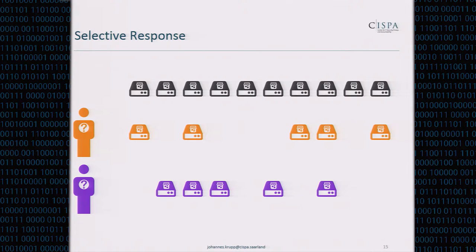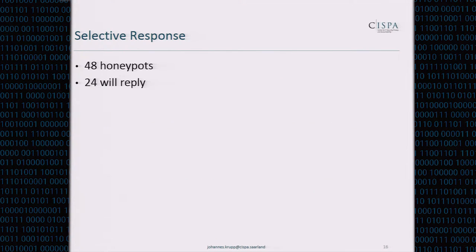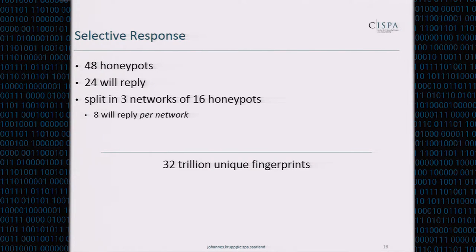We can use this fingerprint to link back attacks. If we see an attack using exactly this set of honeypots, we compare the attack signature to the fingerprints and find which scanner's information was used. We implemented this with 48 honeypots, out of which 24 will always reply, giving us 32 trillion unique fingerprints. For technical reasons we split honeypots into three networks with 8 always replying per network, reducing unique fingerprints to 2 trillion — but that's still fine since there are only 4 billion valid IPv4 addresses.